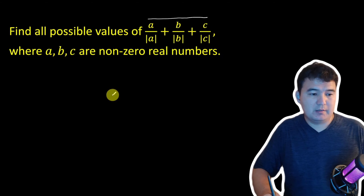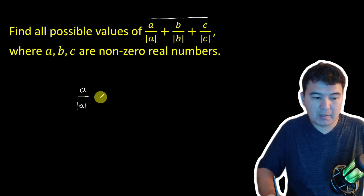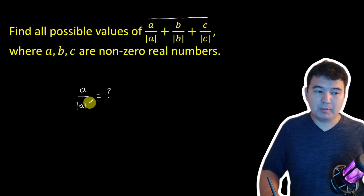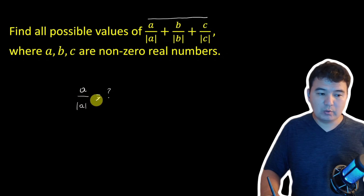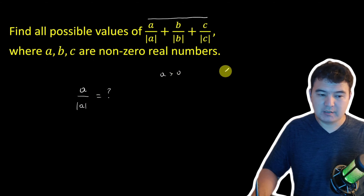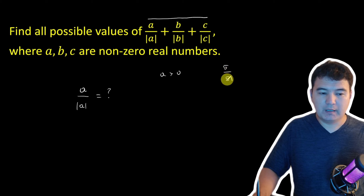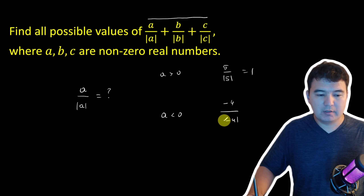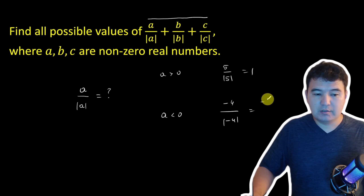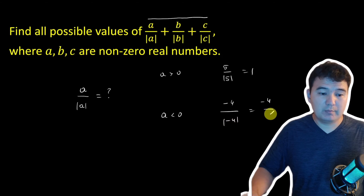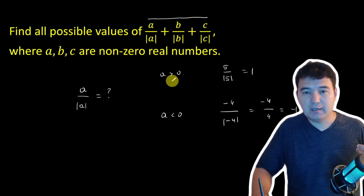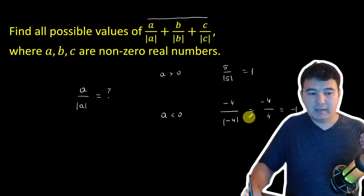Let's start with one expression. What could be the value of A over absolute value of A? The result of this expression can be positive one or negative one — there are only two options. If A is a positive number, for example, 5 over absolute value of 5 is going to be 1. If A is a negative number, negative 4 over absolute value of negative 4 becomes just 4, and this ratio is negative 1. So depending on whether A is positive or negative, the result will be plus 1 or negative 1.